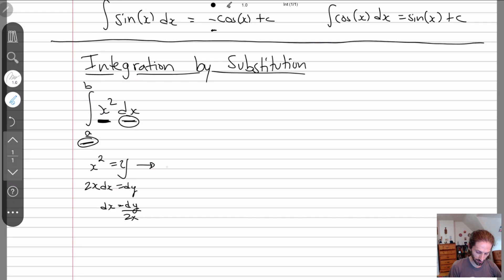This gives me what to do for the x squared, but I still need to figure out the dx and my bounds. So to figure out the dx, what I can do is take the derivative of both sides, 2x dx is equal to dy. This means that dx is equal to dy over 2x.